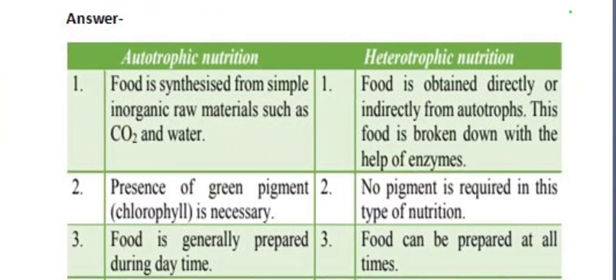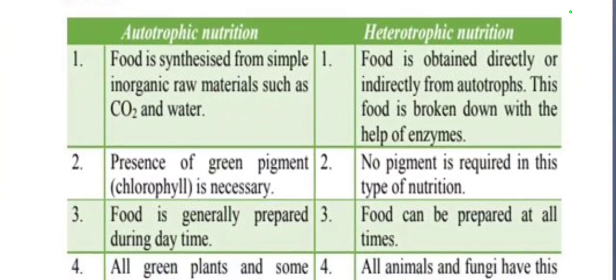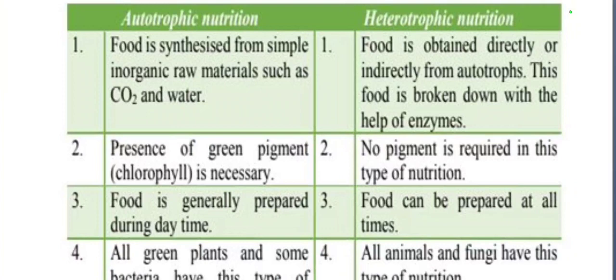In autotrophic nutrition, presence of green pigment chlorophyll is necessary. Whereas in heterotrophic nutrition, no pigment is required. During autotrophic nutrition, food is generally prepared during daytime. Whereas in heterotrophic nutrition, food can be prepared at all times.